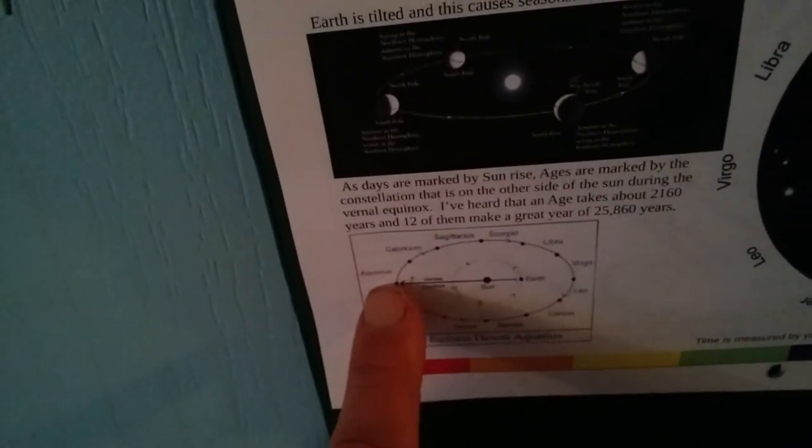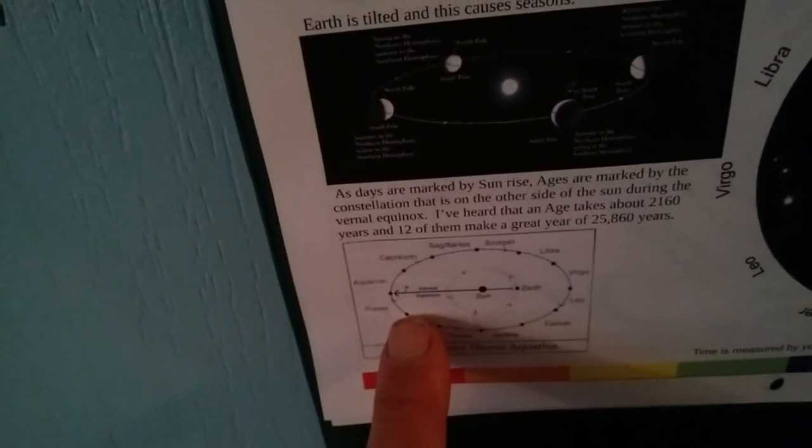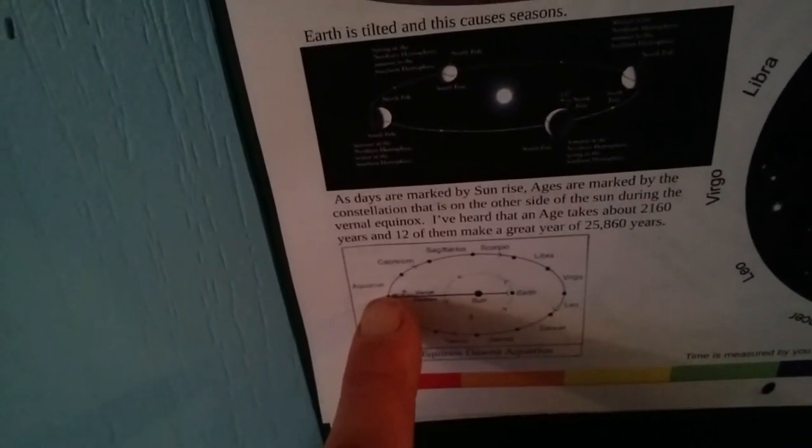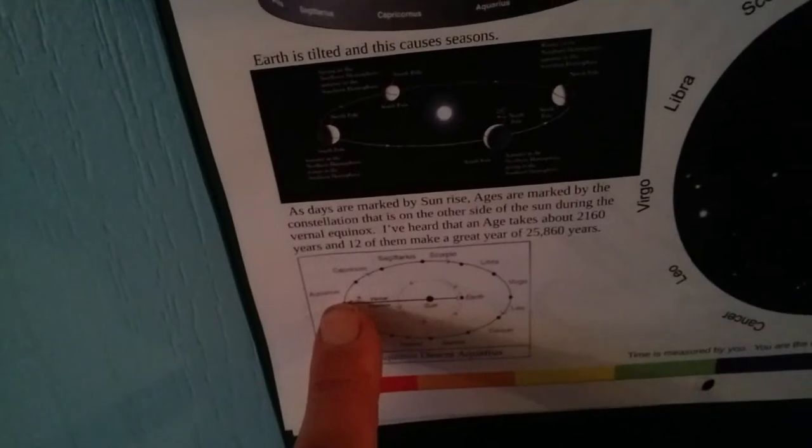So it's the dawning of the Age of Aquarius. There's Aquarius. We're coming out of the Age of Pisces. That's the precession of the equinox.